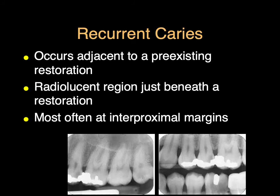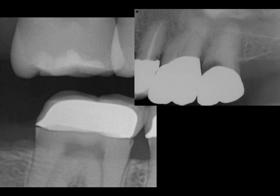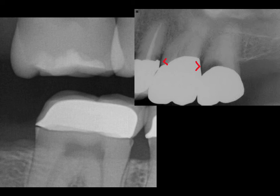Looking at this bite wing, there's recurrent decay certainly around the second premolar, and around the first premolar as well. Looking at the periapical, it shows up very well in both the periapical and the bite wing. In the picture on the right, there's lots of decay around the crown margin. Even on the second premolar, there's recurrent decay around the distal margin. The mesial margin may represent cervical burnout because it looks like it stops at the crestal bone, whereas the distal doesn't extend all the way to the crestal bone, so that represents recurrent decay.